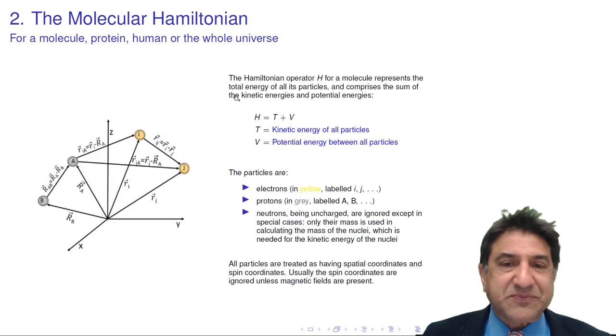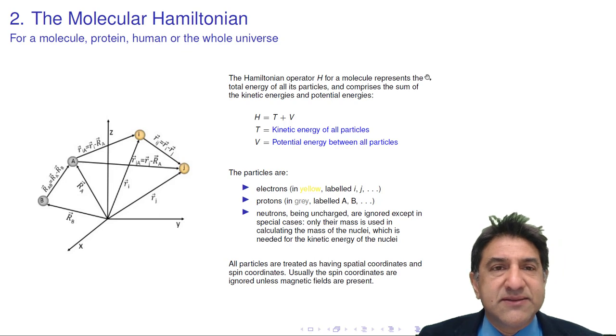So what does it look like? The Hamiltonian, as we said, is the sum of kinetic energy. H, the Hamiltonian, is the sum of the kinetic energy of all the particles, and the potential energy of interaction between these particles. They may be attracting or repelling each other by various forces. That would include electrical forces, gravitational forces, magnetic forces. But actually, in chemistry, in the first instance, it's sufficient to deal just with electrical forces.